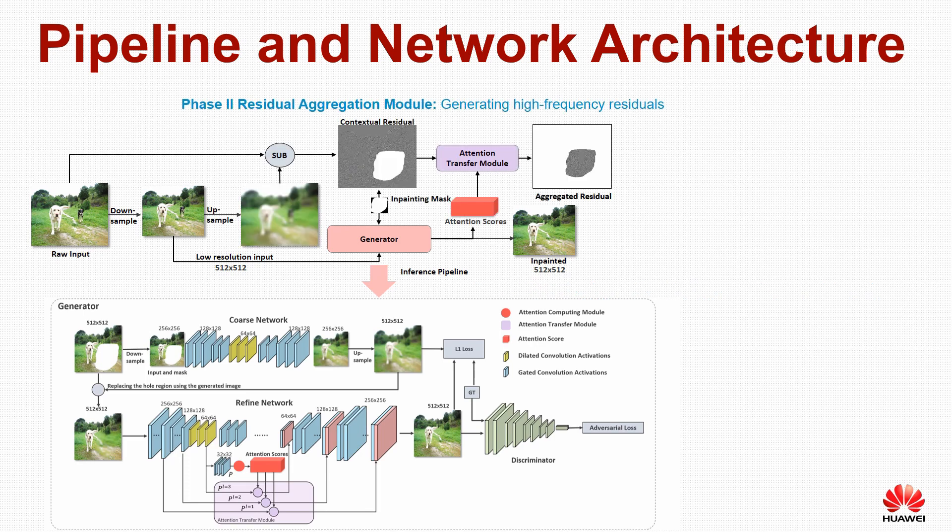In Phase 2, we subtract the raw input image with its blurred version to obtain a contextual residue map. We then compute the residues for the hole region by aggregating the contextual residues based on the similarity scores between the in-hole patches and contextual patches.